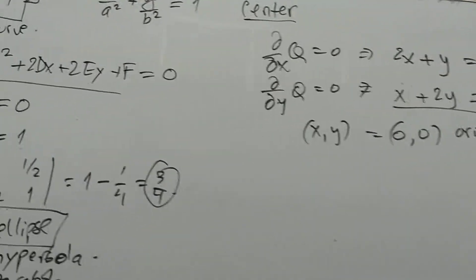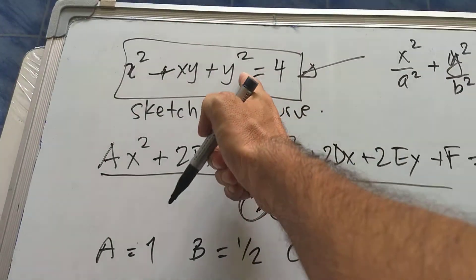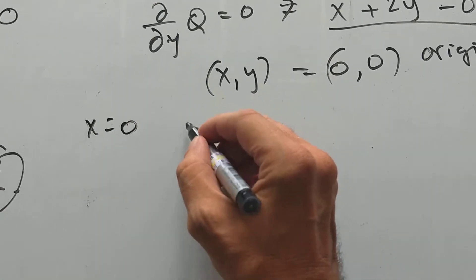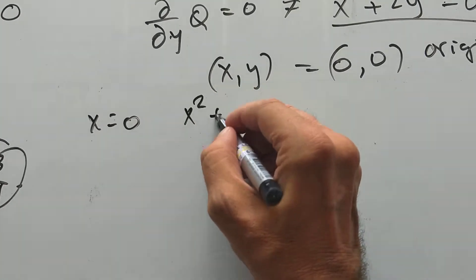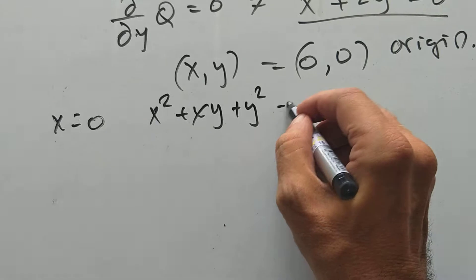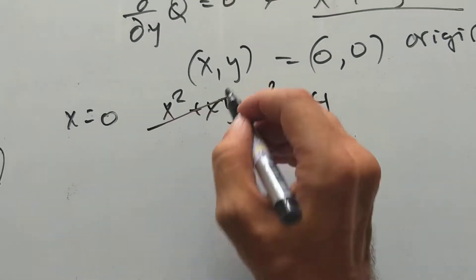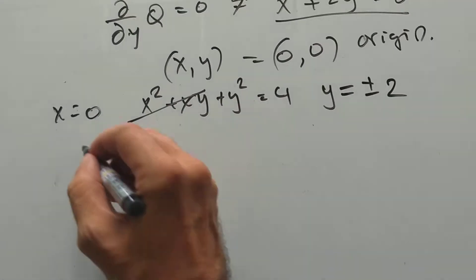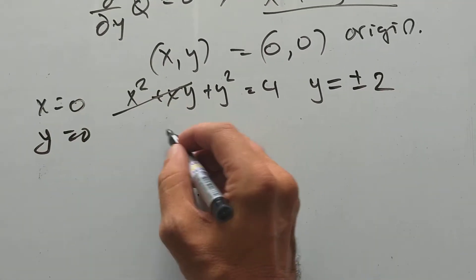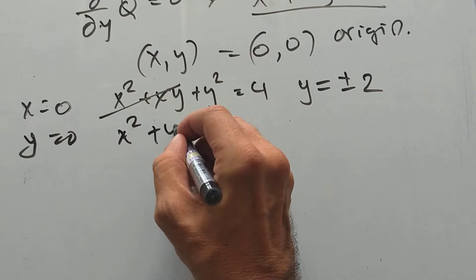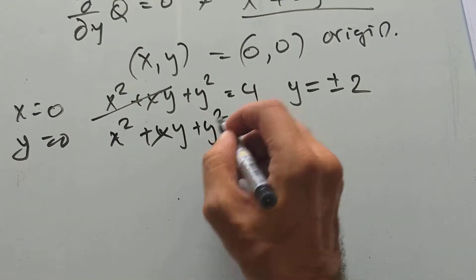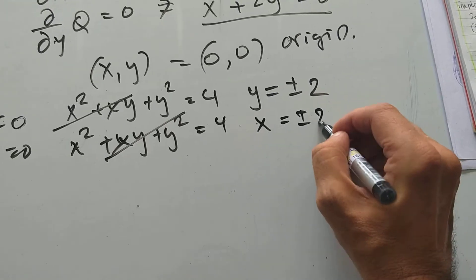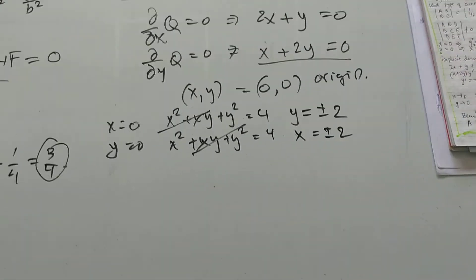Now, let's plug in some numbers into our ellipse. Let's put in X is 0. If X is 0, okay, X squared plus XY plus Y squared is 4. This goes to 0, I get Y is plus or minus 2. And let's put Y is 0. Same thing here. This goes away. I get X is plus or minus 2, square root 4, plus or minus 2.